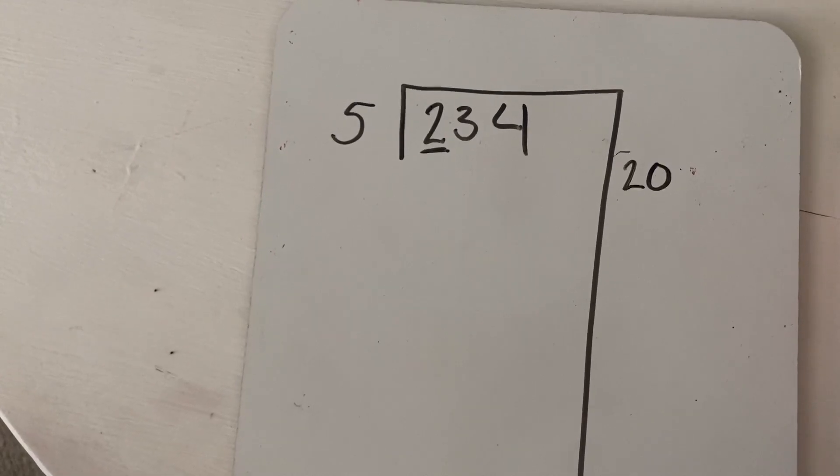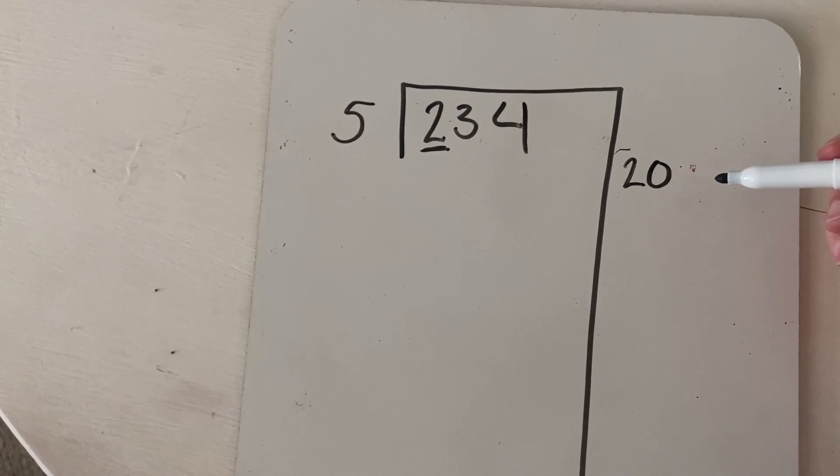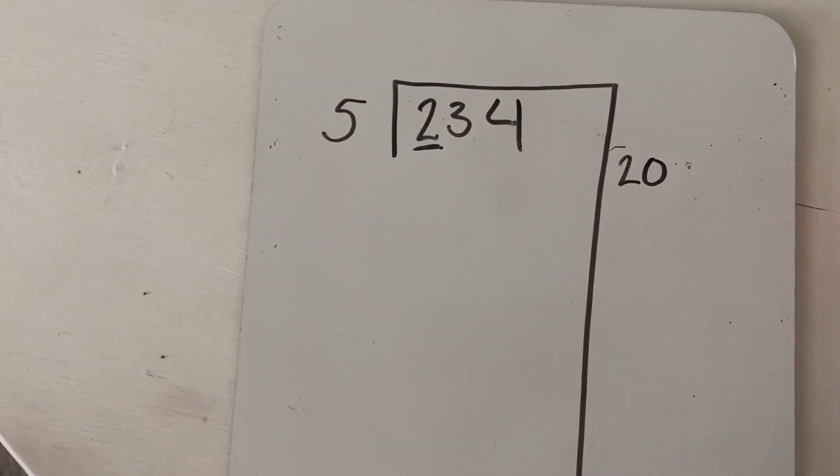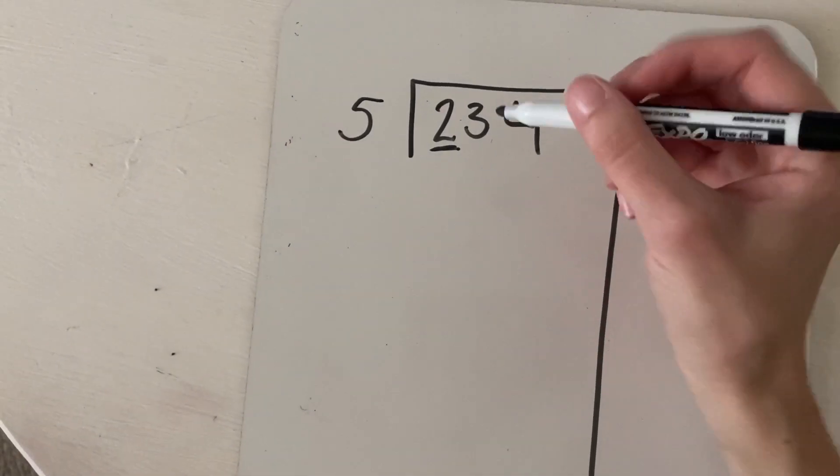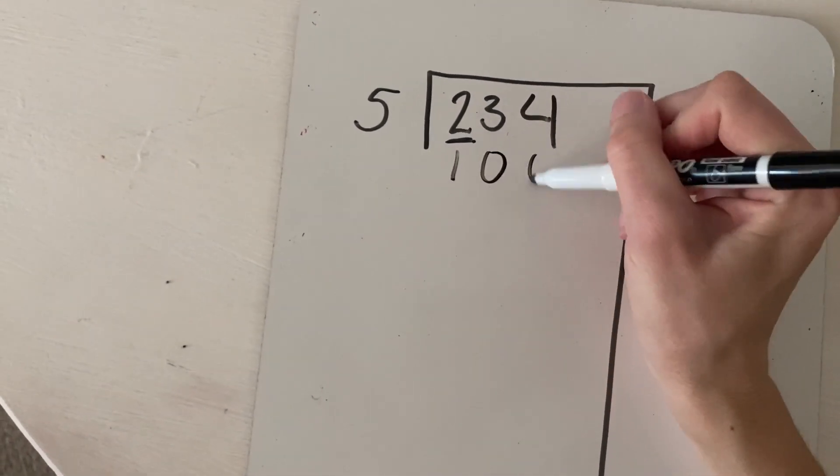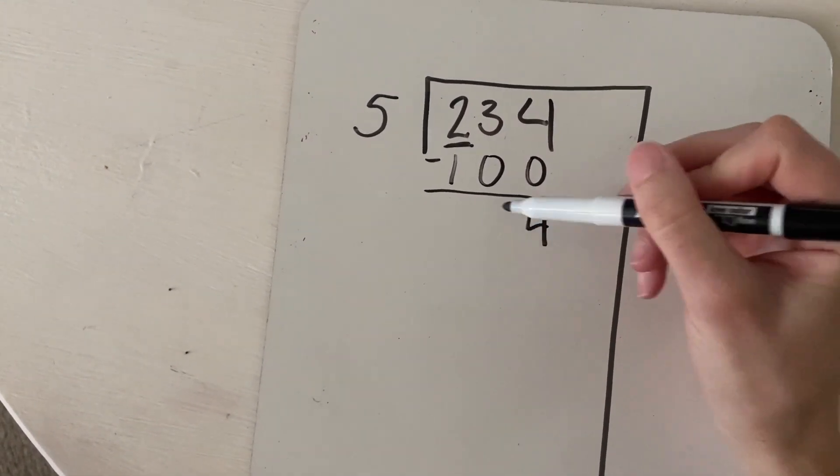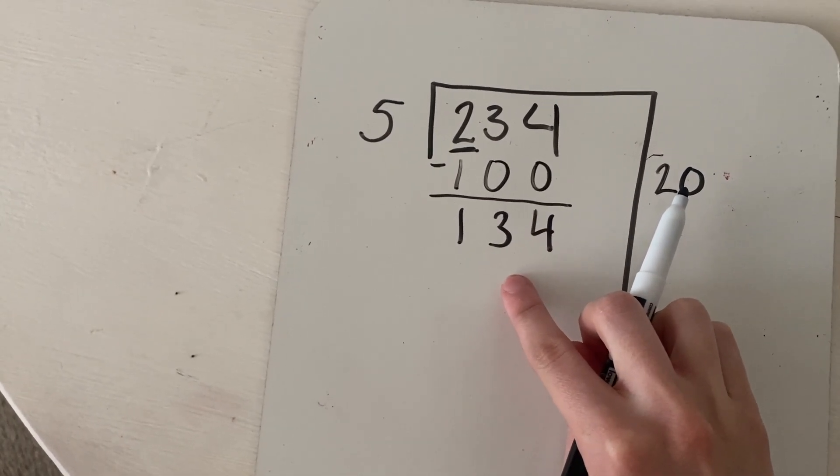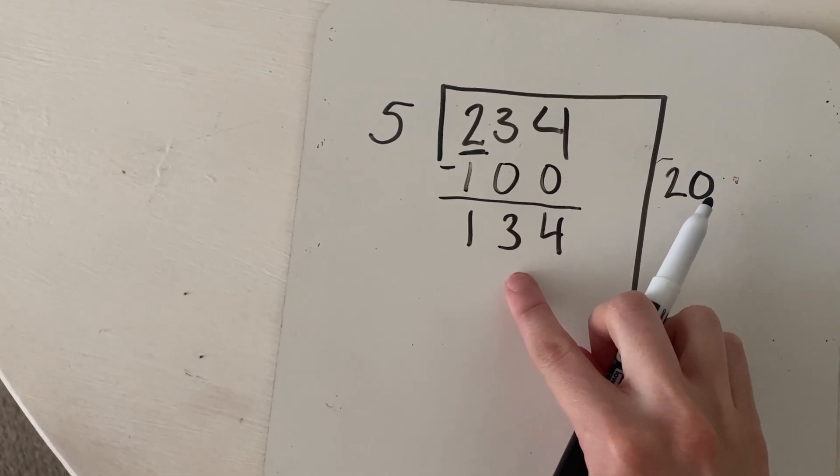They might figure out that it should be five times 40. But if they don't, this is totally fine. I want to show you this method so that you see that they can do partial quotients. They don't have to be the total. So five times 20 would be 100. We're going to subtract that from our total. And now we have 134 left. So now I can think to myself, OK, how many times do I think five could go into 134?